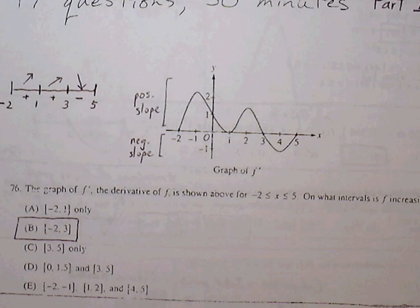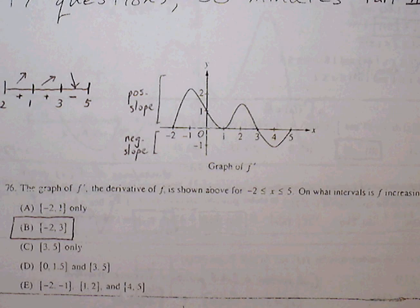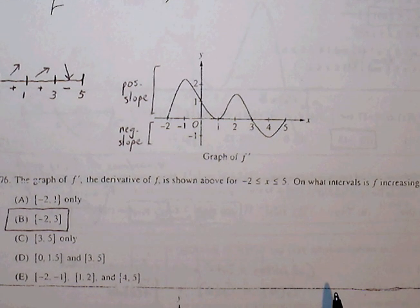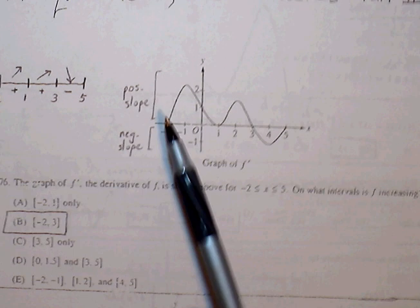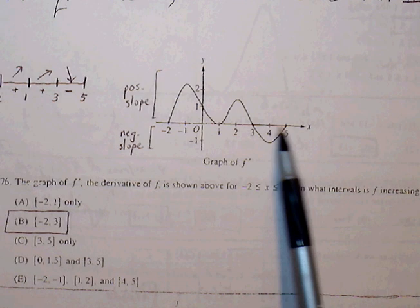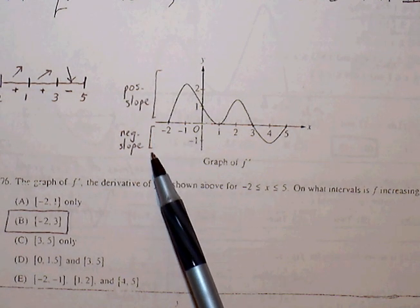So the graph of f prime is shown above for x values between negative 2 and 5. On what interval is our function increasing? If we're looking at the f prime graph, then our axis represents where slope is 0. Above the axis represents positive slope. Below represents negative slope.